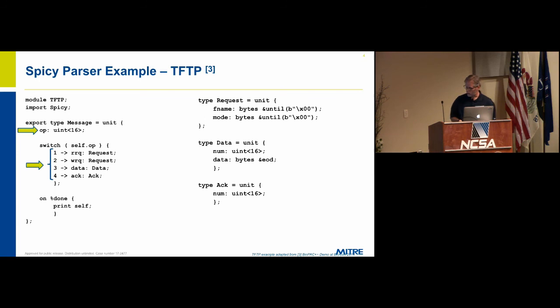The two-byte opcode consists of one of four possible values. In this case, the switch statement is based on that operation. There's another look-ahead kind of switch statement that will demonstrate in another parser shortly. Those four possible values, two of them are the read and write requests which consist of a file name that's some number of bytes until you get to the null terminator, and a mode which is some number of bytes until you get to the null terminator.